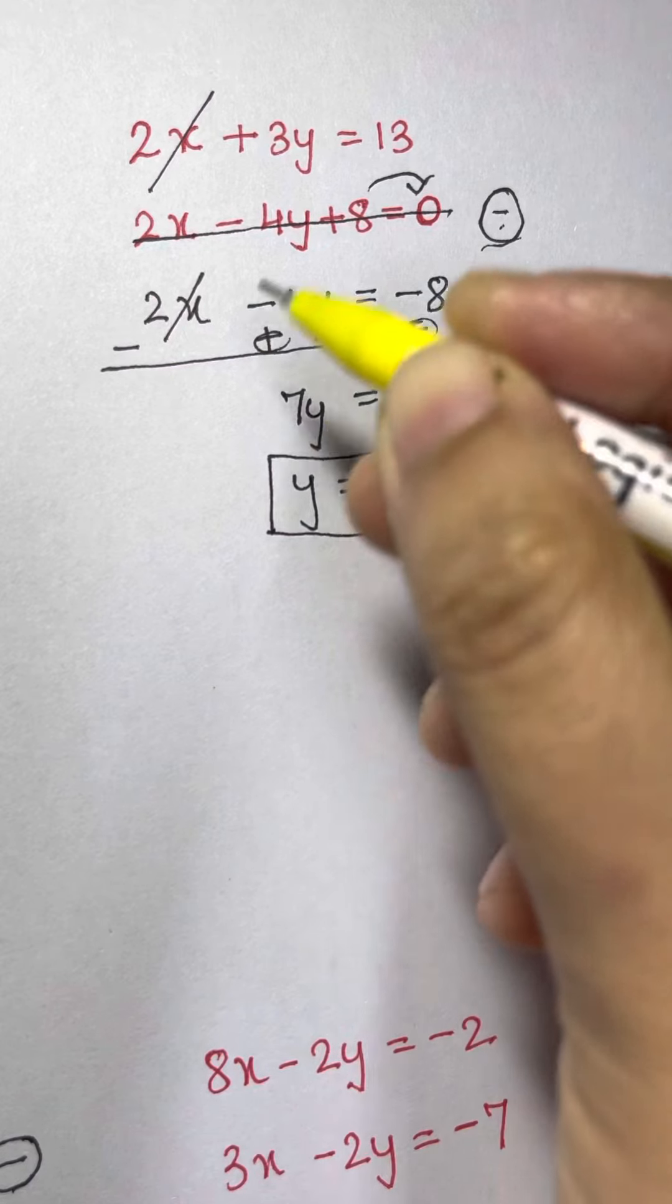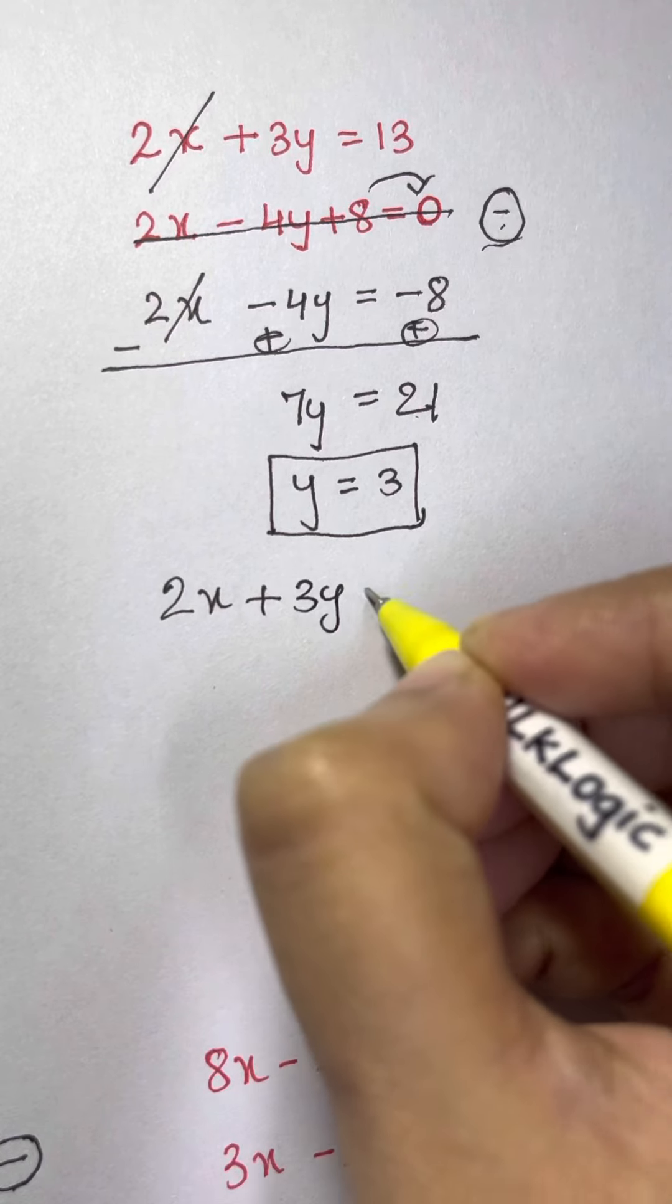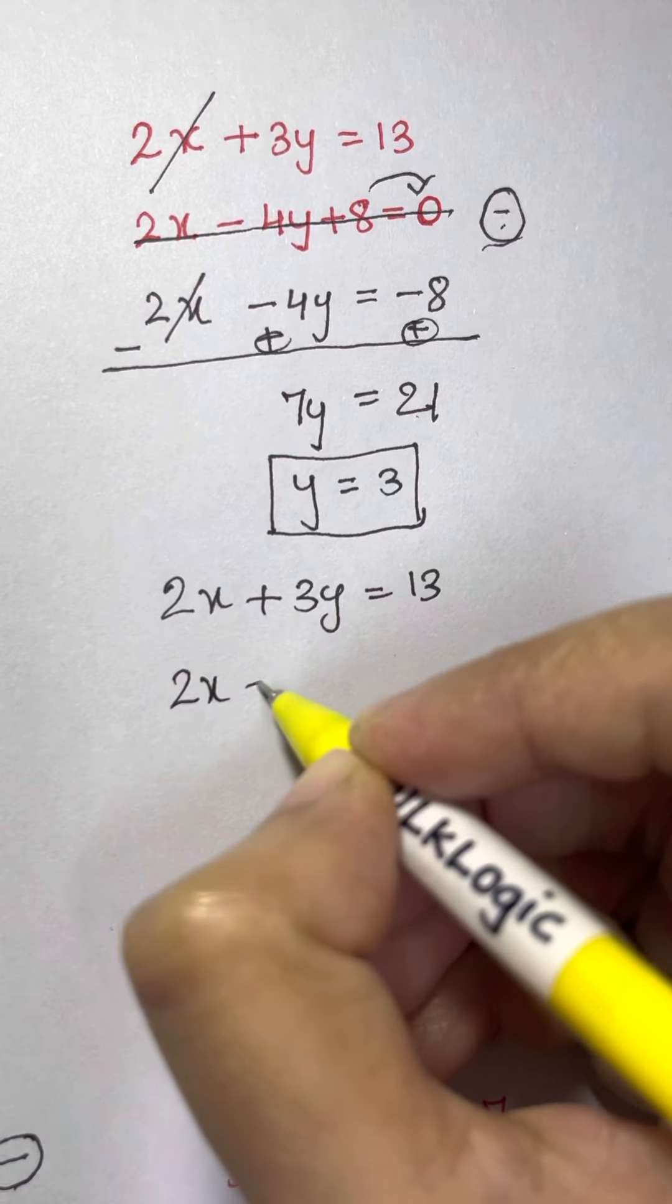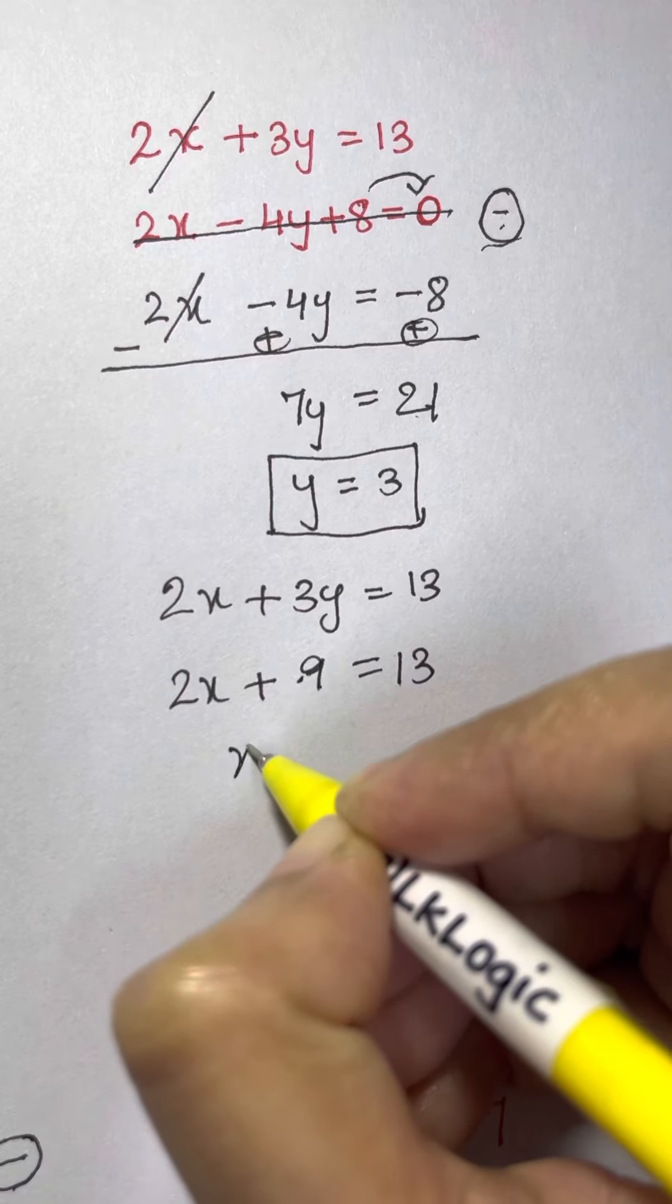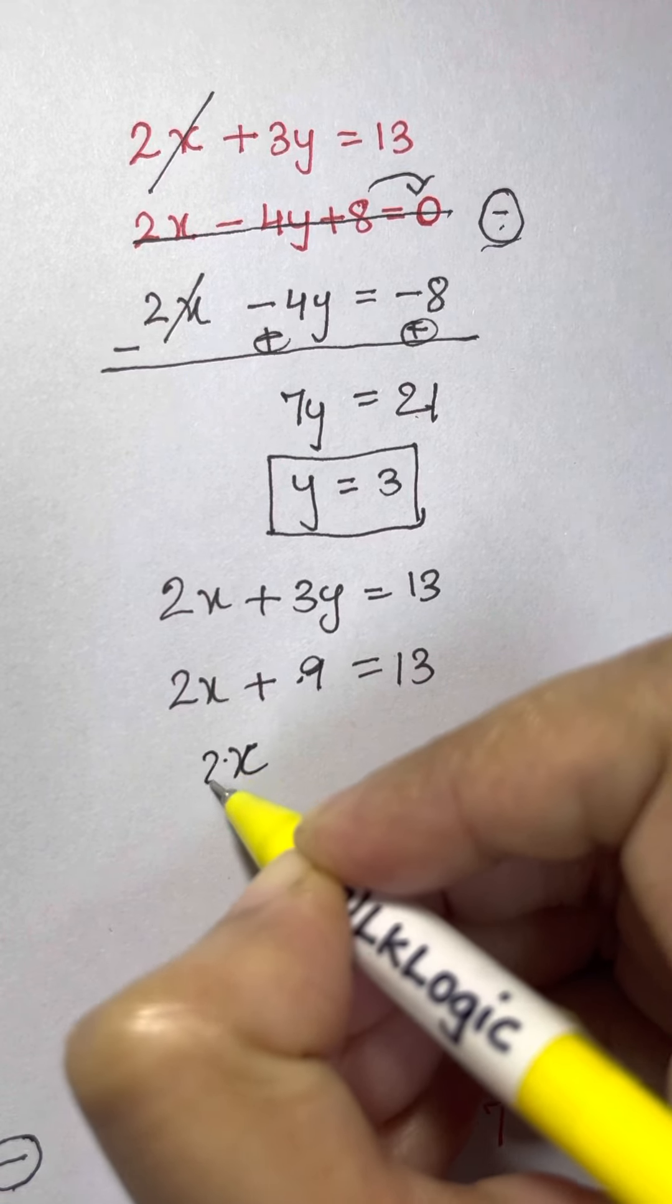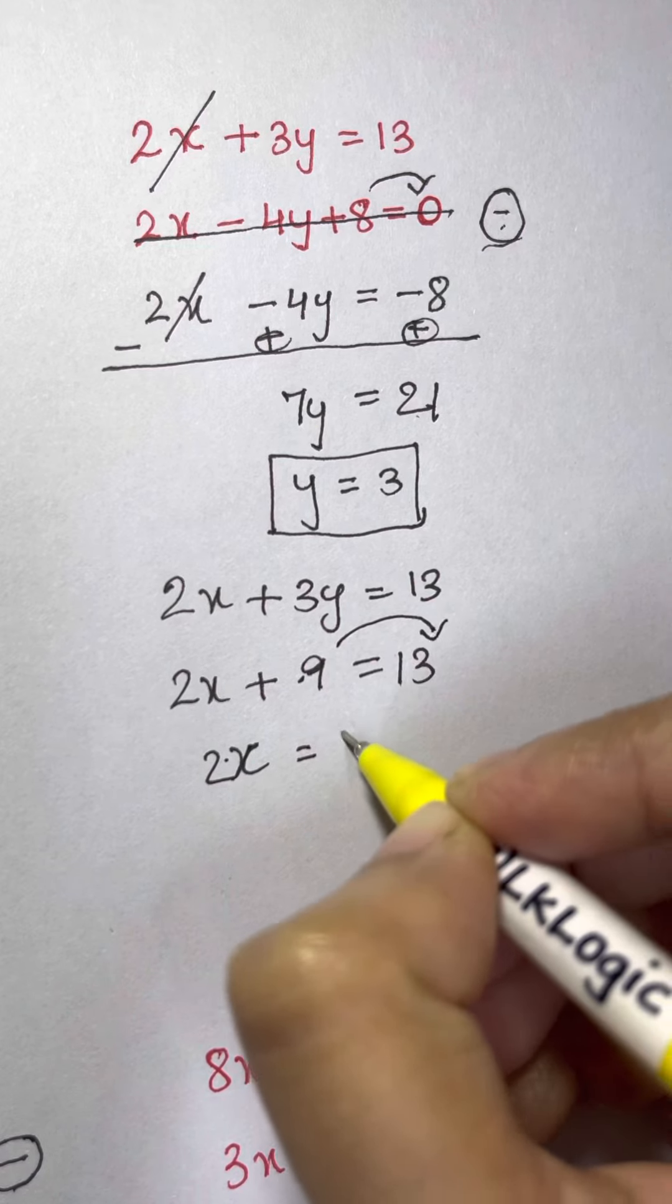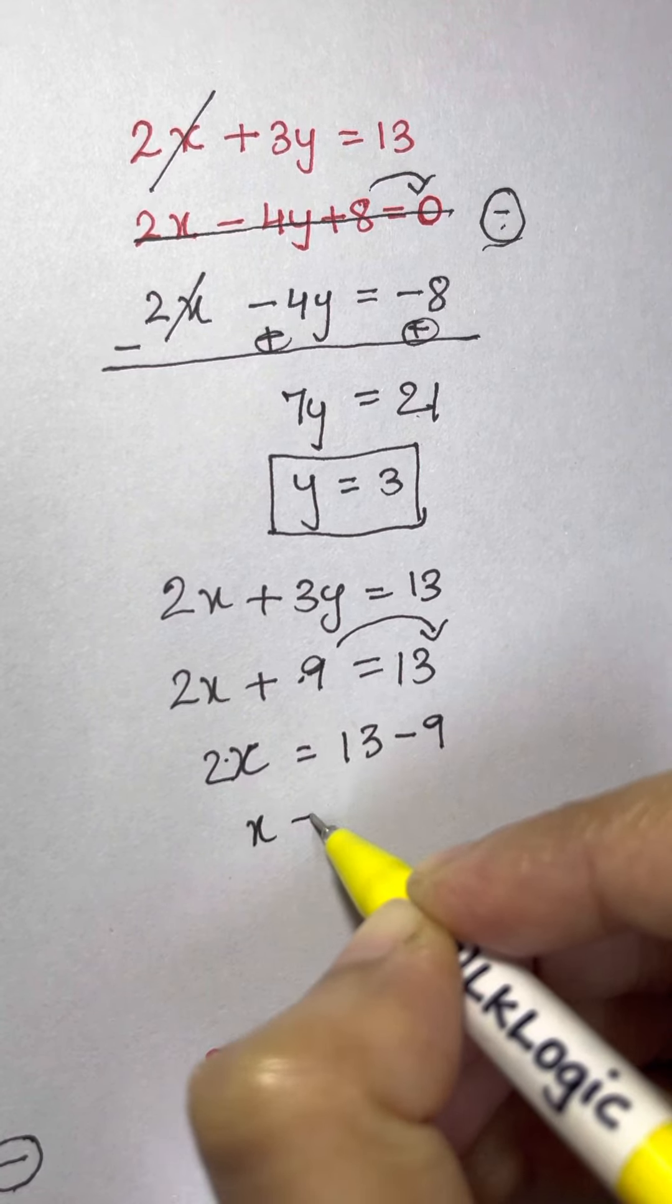Now let's find out x value. So substitute on this. 2x plus 3y equals to 13. So 2x plus 3 multiplied by 3. That's 9 is equal to 13. So 2x is equal to, bring 9 this side. It becomes negative. 13 minus 9. x is equal to, 13 minus 9 is 4 divided by 2. Which is equal to 2. So x is equal to 2.